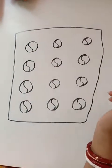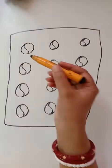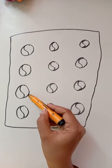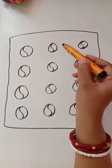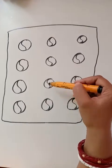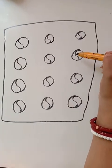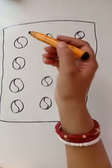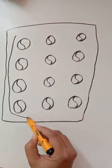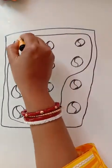Let's count and make a group of 10. 1, 2, 3, 4, 5, 6, 7, 8, 9, 10. Now this is a group of 10 balls.